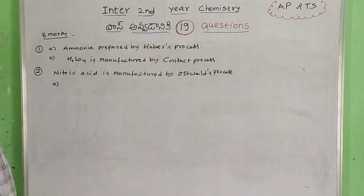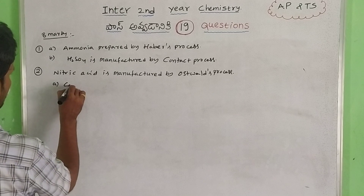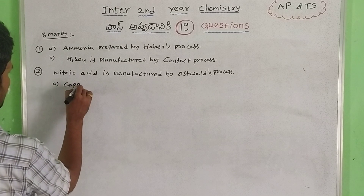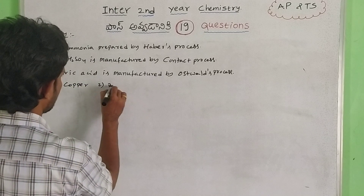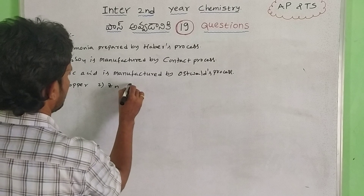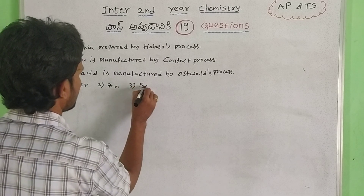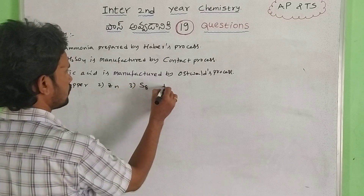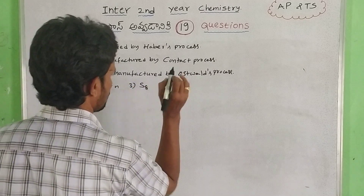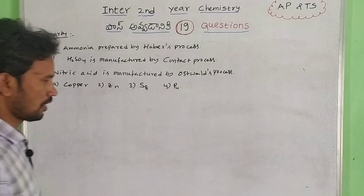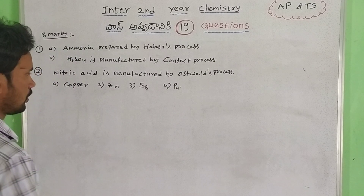The first one is copper. The second one is zinc. The third one is sulfur. The fourth one is phosphorus. These properties should also be noted.